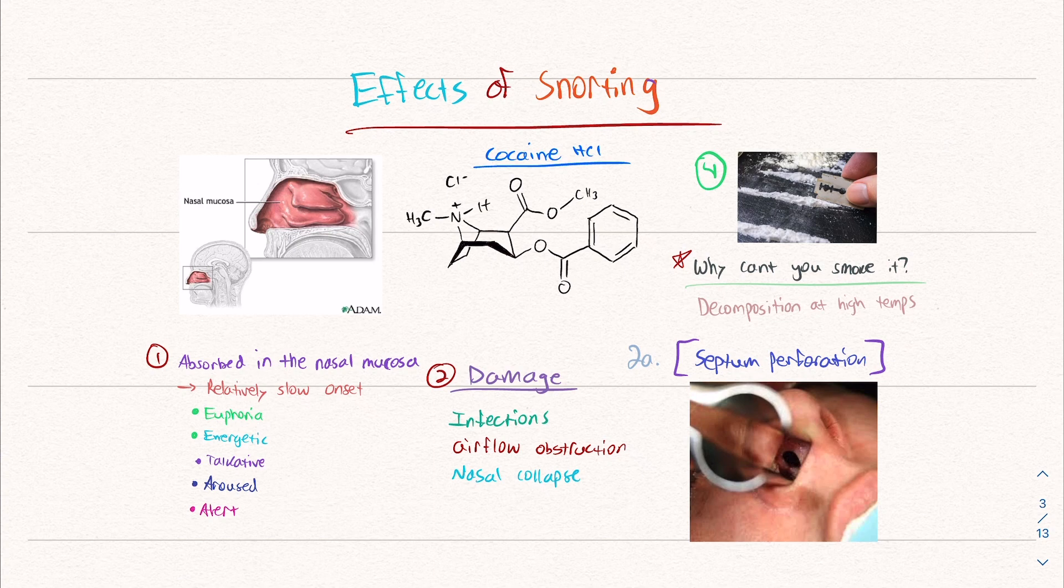When you snort, it's absorbed in the nasal mucosa, this very highly absorbent area in the nose. It's relatively slow to kick in. I know there's differences in the composition compared to crack cocaine. It takes a little bit more time. The effect isn't as instant, at least the climax of the effect. It produces euphoria, energy, you become talkative, aroused, alert.